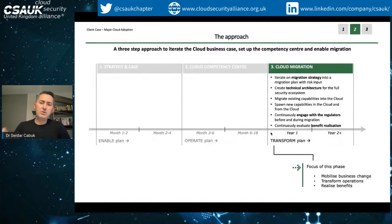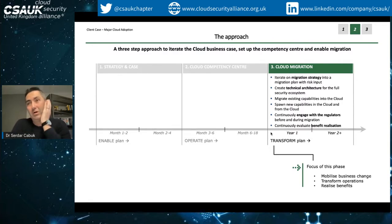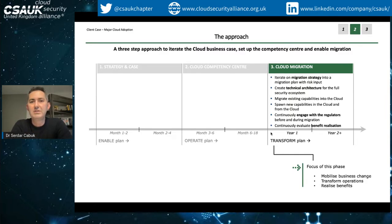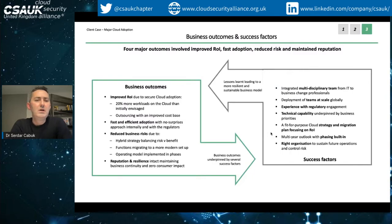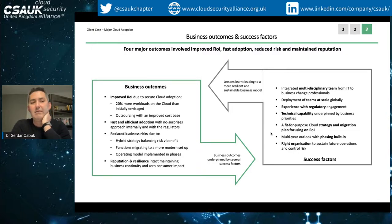Going back to this client example - this was a major cloud adoption. The operating model side: they were still very reluctant to put anything from the security function onto a cloud service provider's responsibility, so the initial phase was all about keeping all of their security functions in-house. But eventually and slowly that changed, and that's why a phased approach is useful. This thing started at six to eight months, then 18 months, but even after two years we were still updating the operating model.